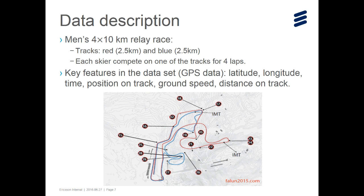We pick one of the many ski races from the 2015 World Ski Championship — the men's 4x10 km relay race. In each team there are four skiers, and each skier will compete on one of the two tracks, denoted by the red and blue curves in the figure. Each track is 2.5 km long, so each skier competes on one track for four laps. Key features in the dataset include latitude, longitude, time, position on track, ground speed of the skier, and distance on track.